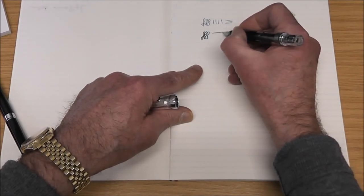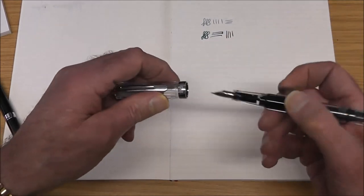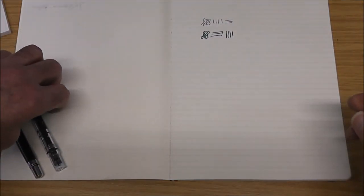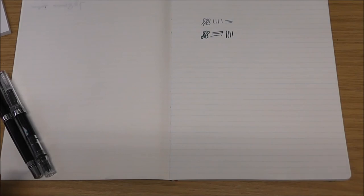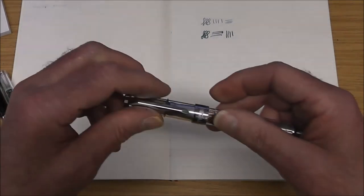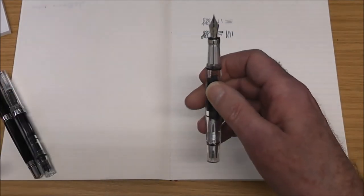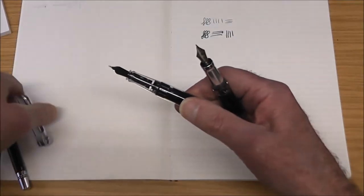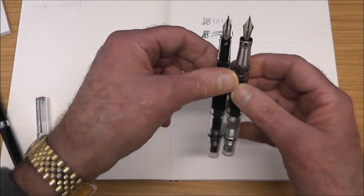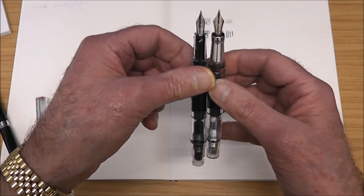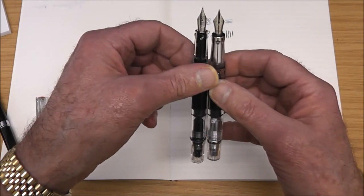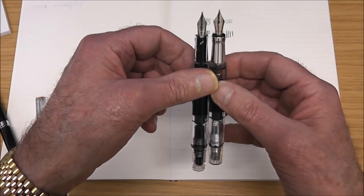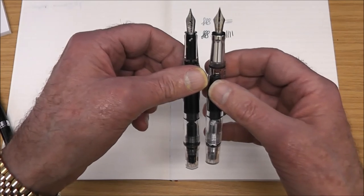Now talking about nibs, most of them come in extra fine, fine, medium, and broad. Many of them have a 1.1 stub, and some of them have a 1.5 stub. This is the top of the range—the Diamond 580. One thing I do want to point out is that it does actually have a slightly larger nib. Those that are well versed in the ways of pens will have heard things like number 5 nibs and number 6 nibs. This looks like a 5 to me probably. This—not quite sure. All depends on the size of the feed. A slightly larger and more elegant nib on this 580.